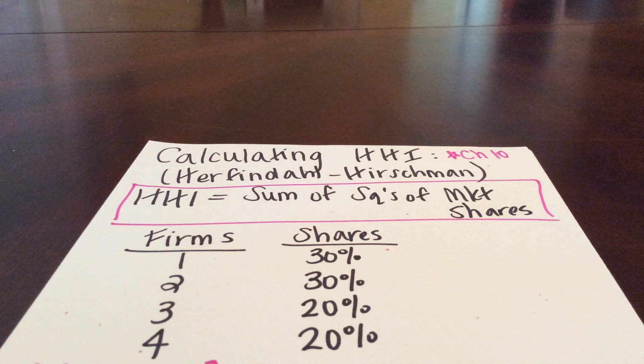This is Professor Melanie Hildebrandt. I'm going to work another example from chapter 10. This problem does not come directly from the textbook. There are some problems, at least one I think, in the MyEconLab study plan that is related to this. In this problem,